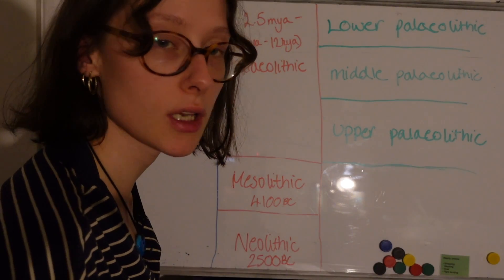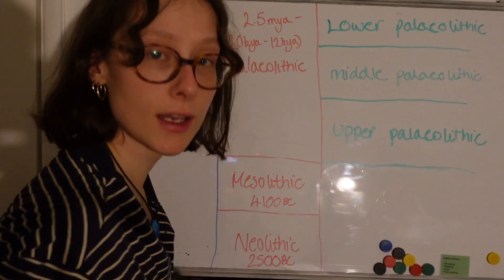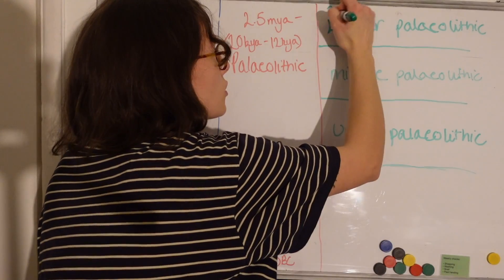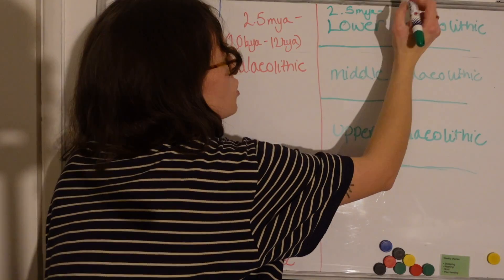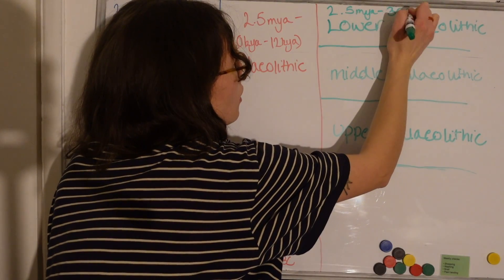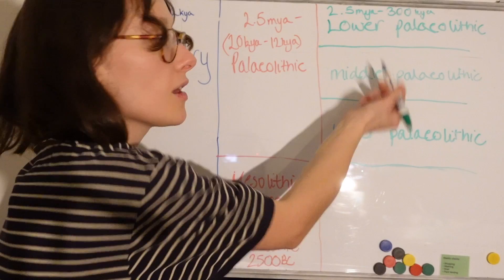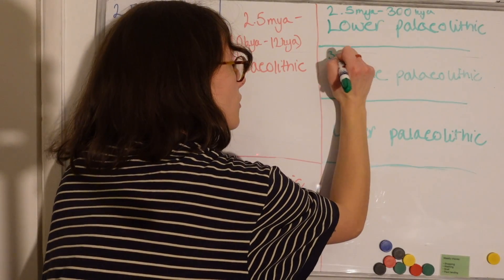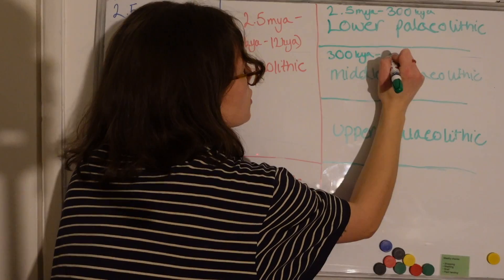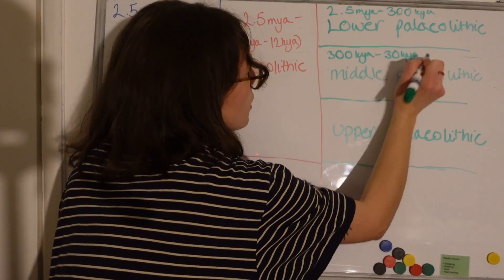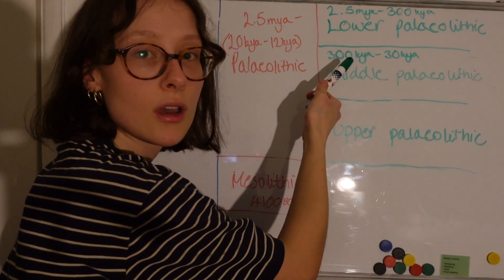Now owing to the archaeology, we can say the lower paleolithic takes up the biggest chunk here. About 2.5 million years ago to 300,000 years ago. Now the middle paleolithic is where we come in. About 300,000 years ago to 30,000 years ago. Now this is owing to the archaeology.